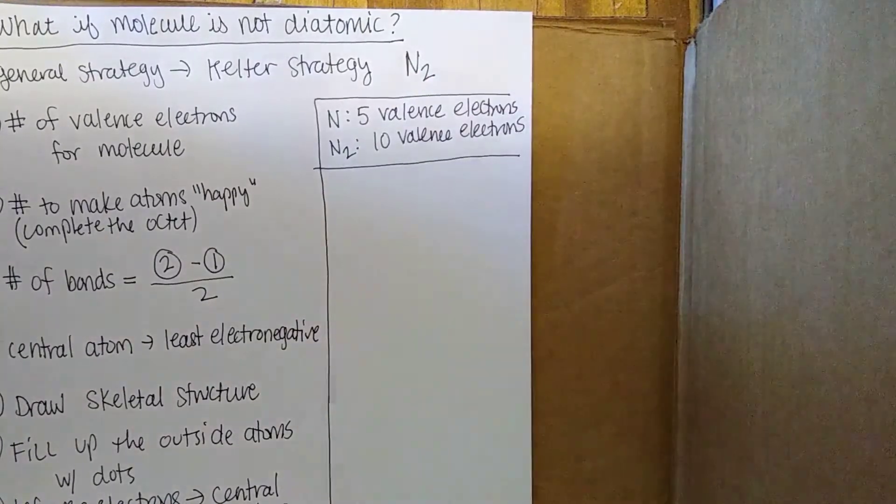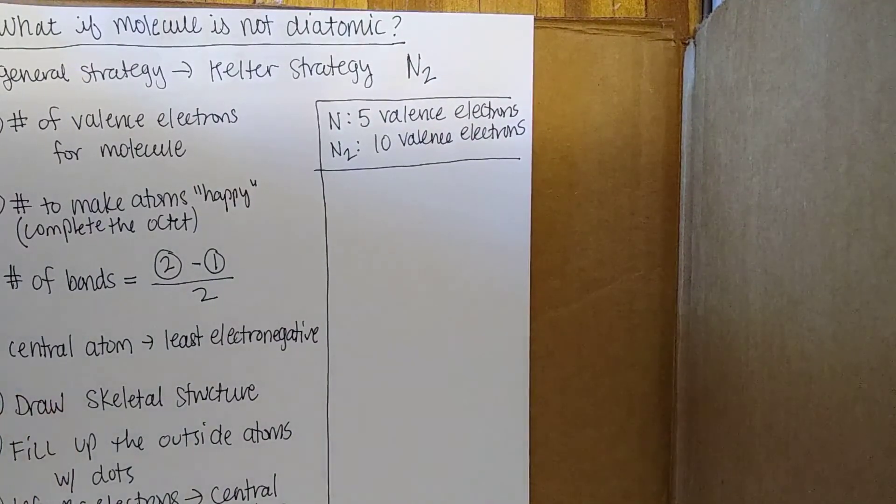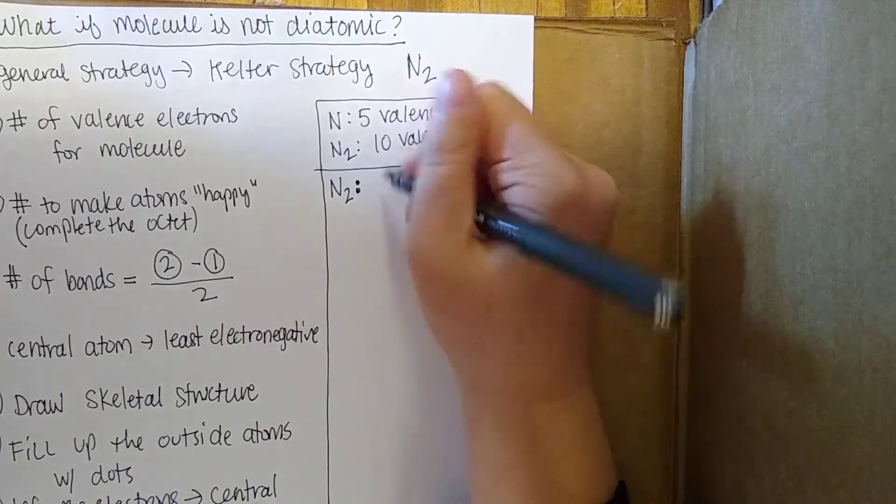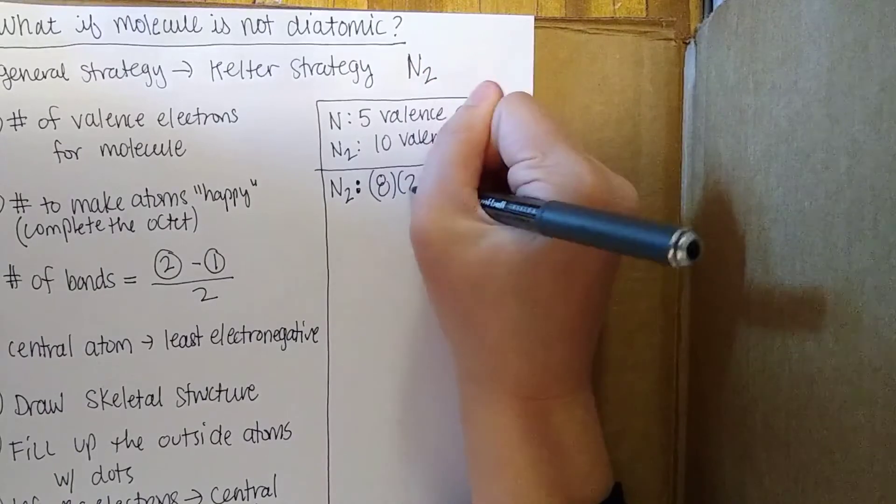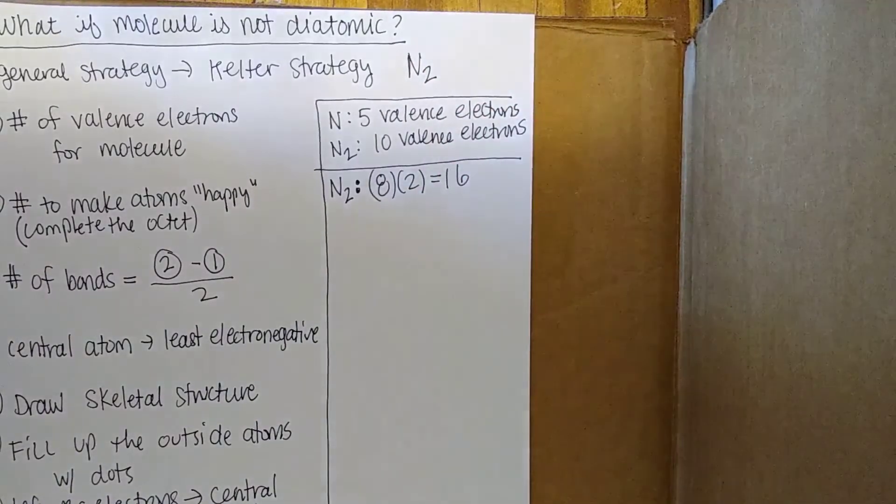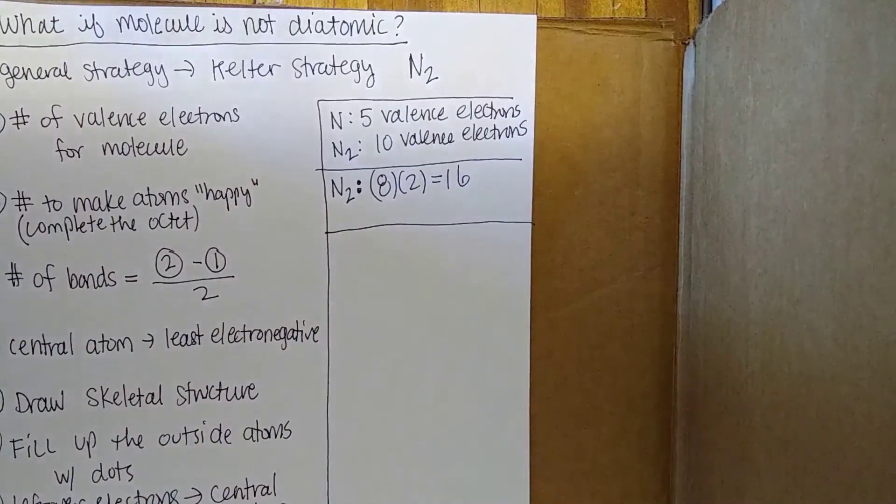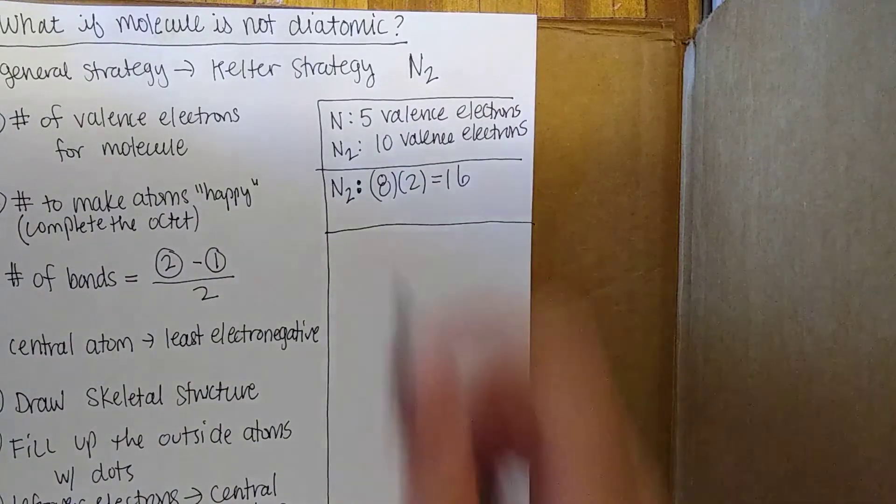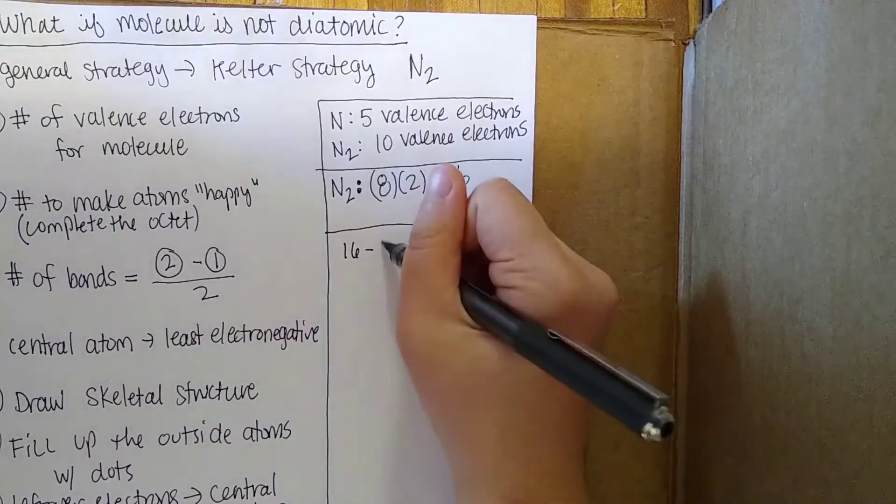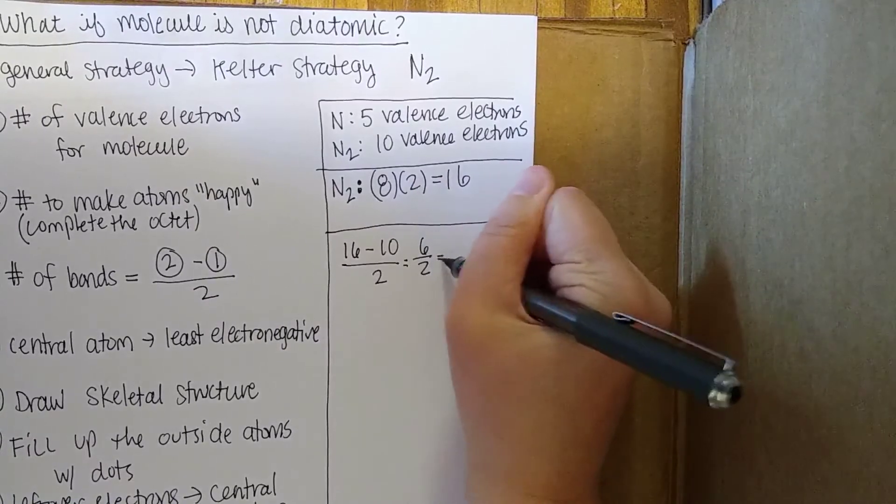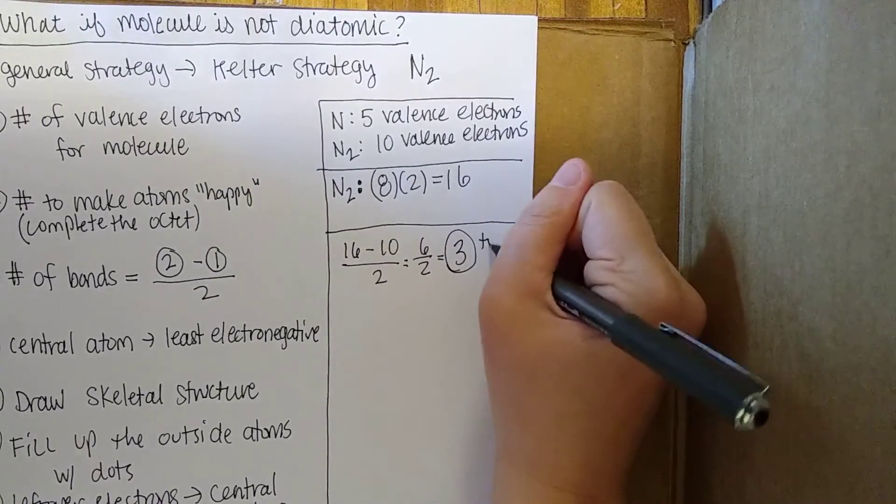So now we know that we have 10 electrons to work with. We need to make each one of these nitrogens happy, which means we need to have each nitrogen have a complete octet. So that means N2 should have 8 times 2 electrons, which is 16. So we need to create some bonds to complete these octets. 16 minus 10 divided by 2, that's 6 over 2, so we have 3. We have a triple bond here.